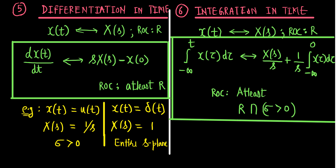The next and most important property is the time convolution property — the seventh property.